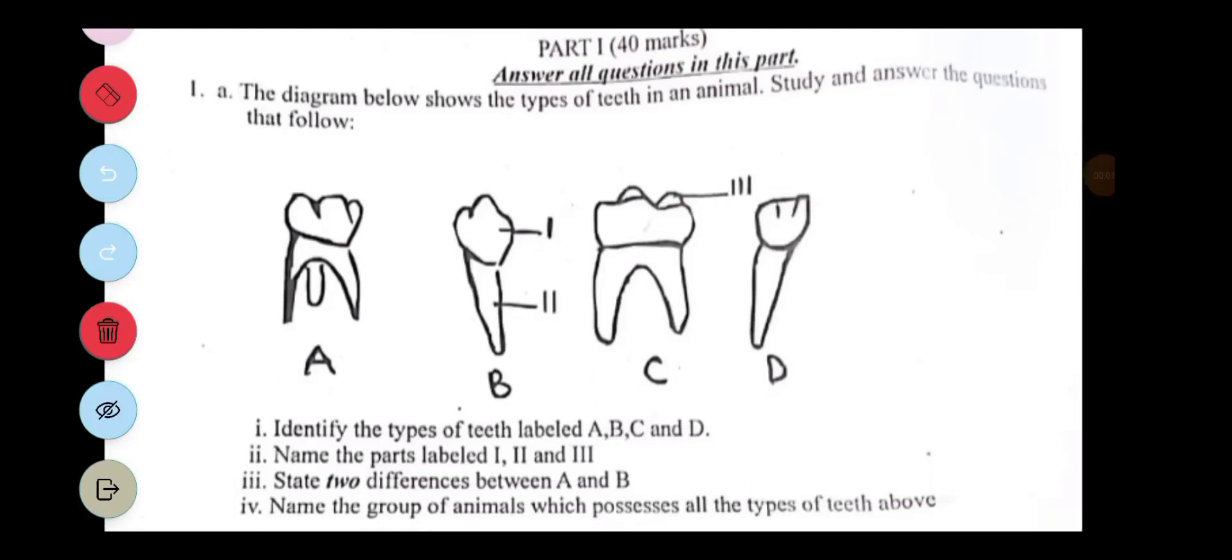So with this practical question, it says the diagram below shows the types of teeth in an animal. Study and answer the questions left for you. We have A, B, C, and D. With practical questions, every sentence is important to give you an idea.